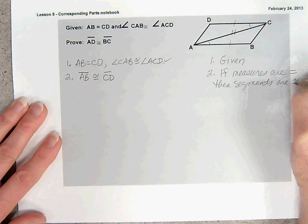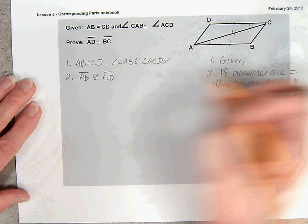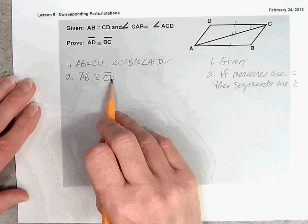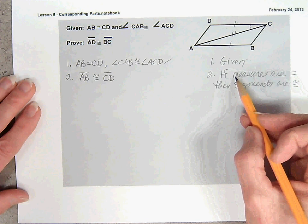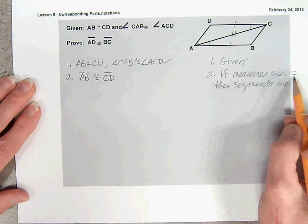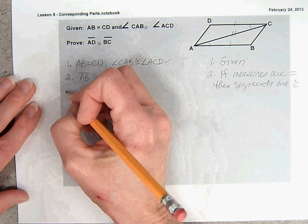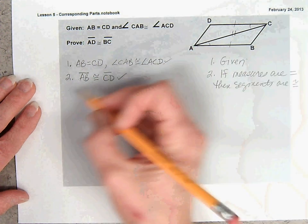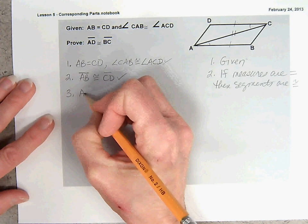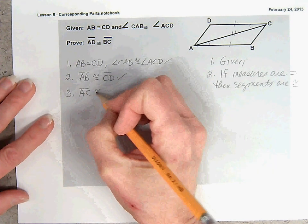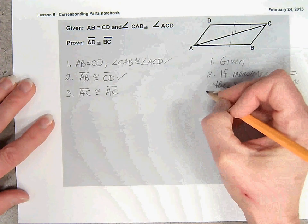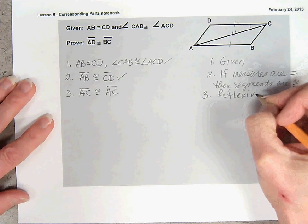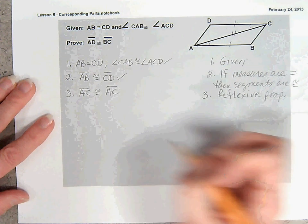Remember to be very general on your reasons and specific on your statements. So we specifically stated the segments, but on the reasons side, in general, any segment whose measures are equal, then they are congruent. So now we've got an angle and our side. Now we need to state that segment AC is congruent to itself, and we can do that using the reflexive property — not reflective, reflexive.